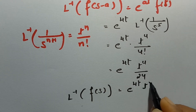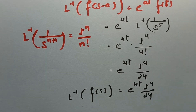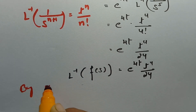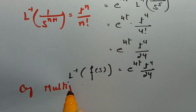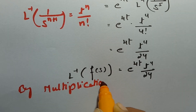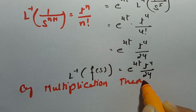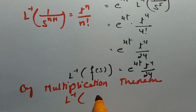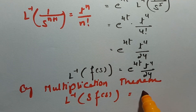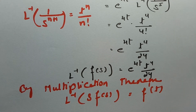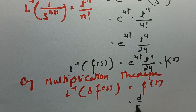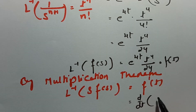Therefore, the inverse Laplace transform of F(s) is ready as e^(4t) · t^4 / 24. Now, by applying the multiplication theorem — inverse Laplace transform of s·F(s) is f′(t) — I have to make one derivative of f(t), which is d/dt of e^(4t) · t^4 / 24.